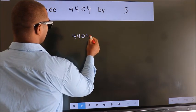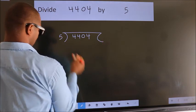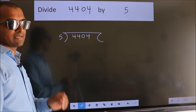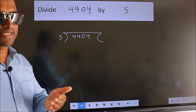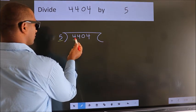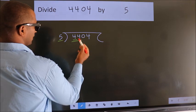4404 here. 5 here. This is your step 1. Next. Here we have 4. Here 5. 4 is smaller than 5. So we should take two numbers, 44.